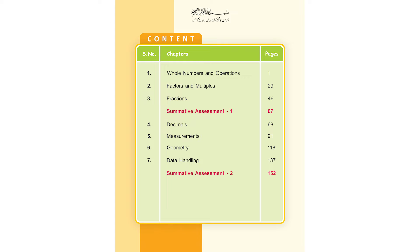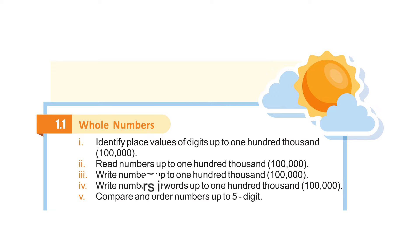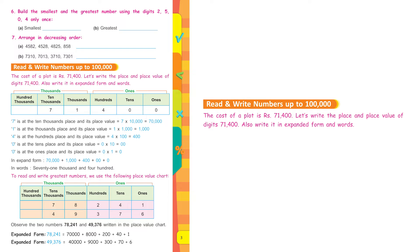Mathematics Success Book 4, Whole Numbers. The learning objectives (SLOs) we are going to work upon are: identify place values of digits up to 100,000; read numbers up to 100,000; write numbers up to 100,000; write numbers in words up to 100,000; compare and order numbers up to five digits. Page 3: Read and write numbers up to 100,000.